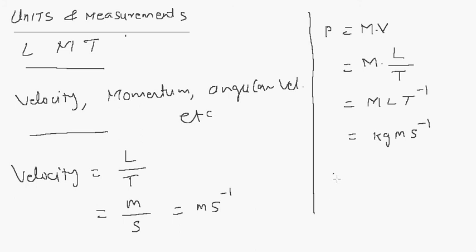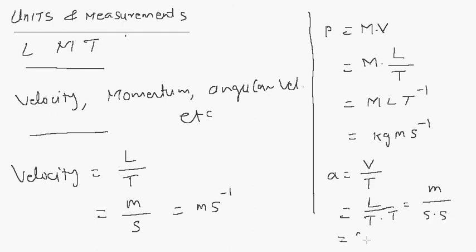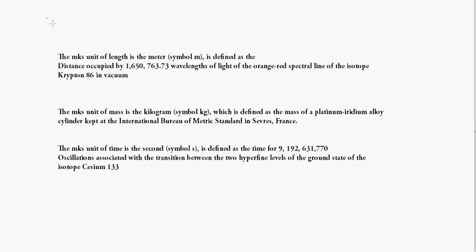Similarly, for acceleration, which is the rate of change of velocity per unit time t, velocity V equals length over time. So acceleration is length over time squared, measured in meters per second squared, which equals m·s⁻². The definitions for these three fundamental quantities of length, mass, and time are posted here.